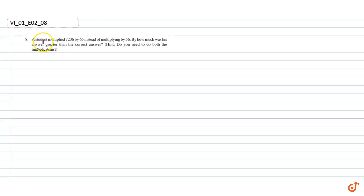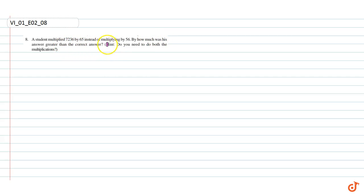In this question, it is given that a student multiplied 7236 by 65 instead of multiplying by 56. By how much was his answer greater than the correct answer?